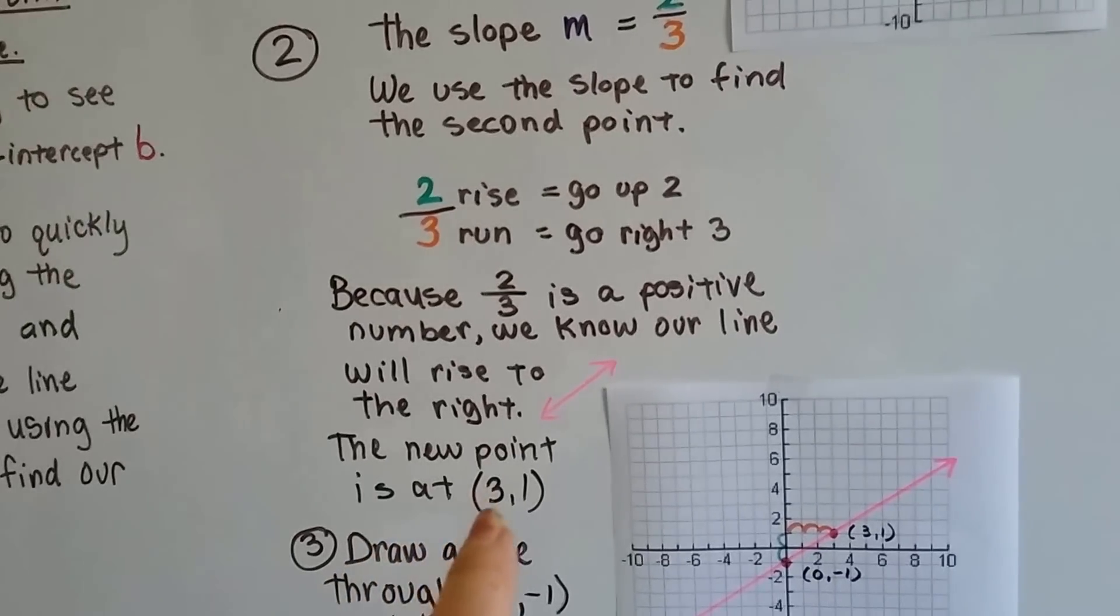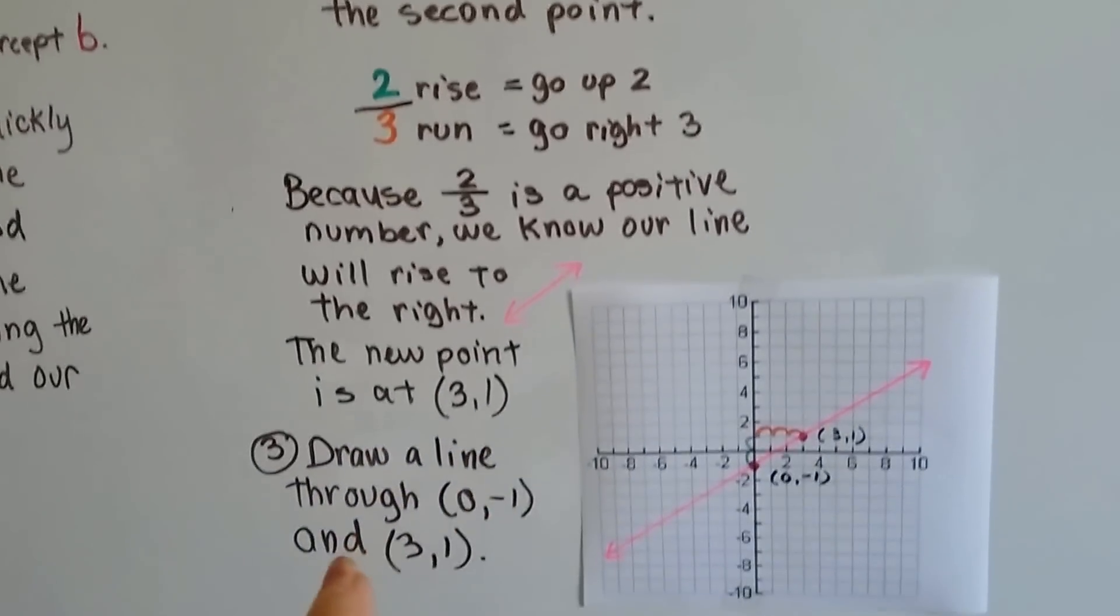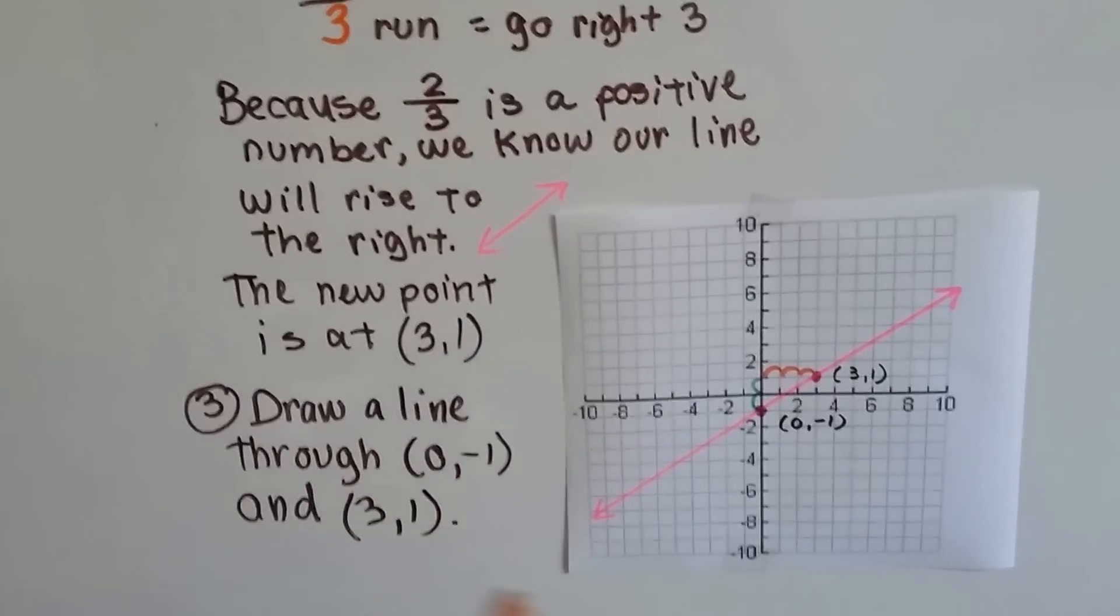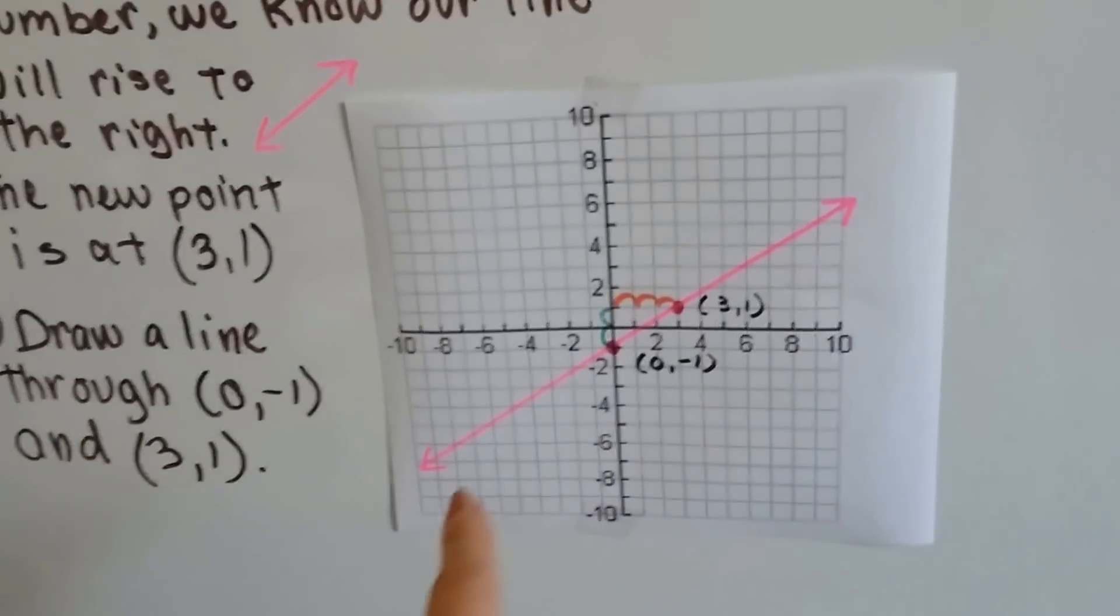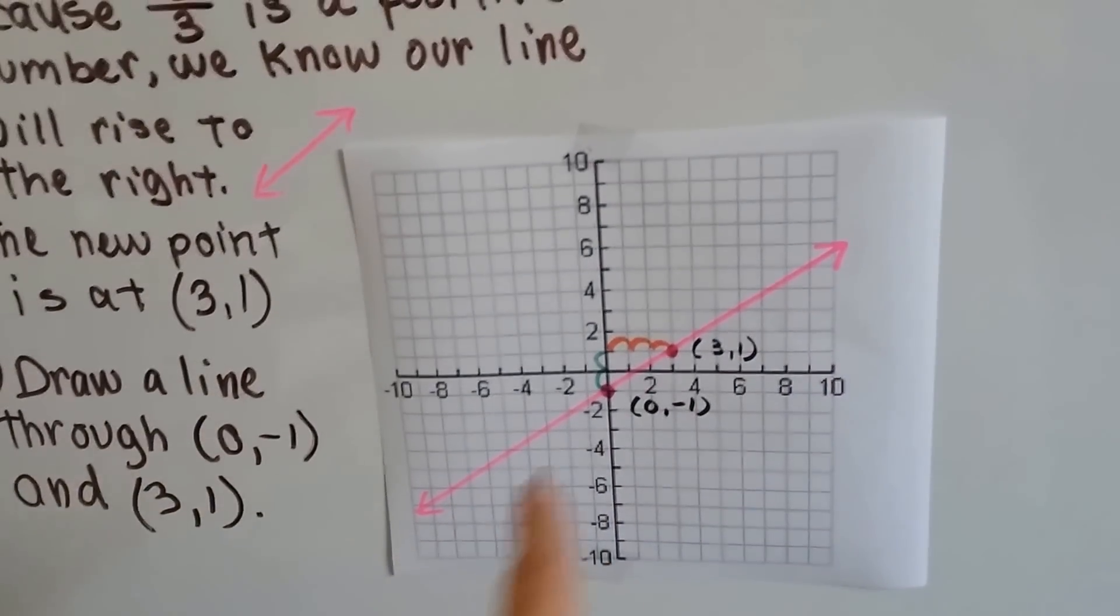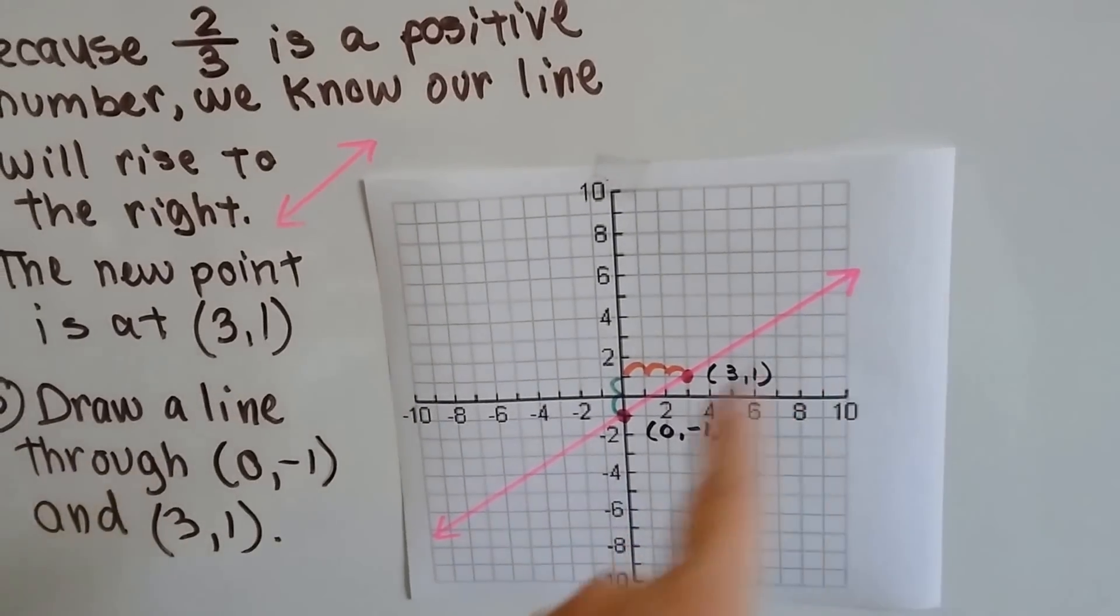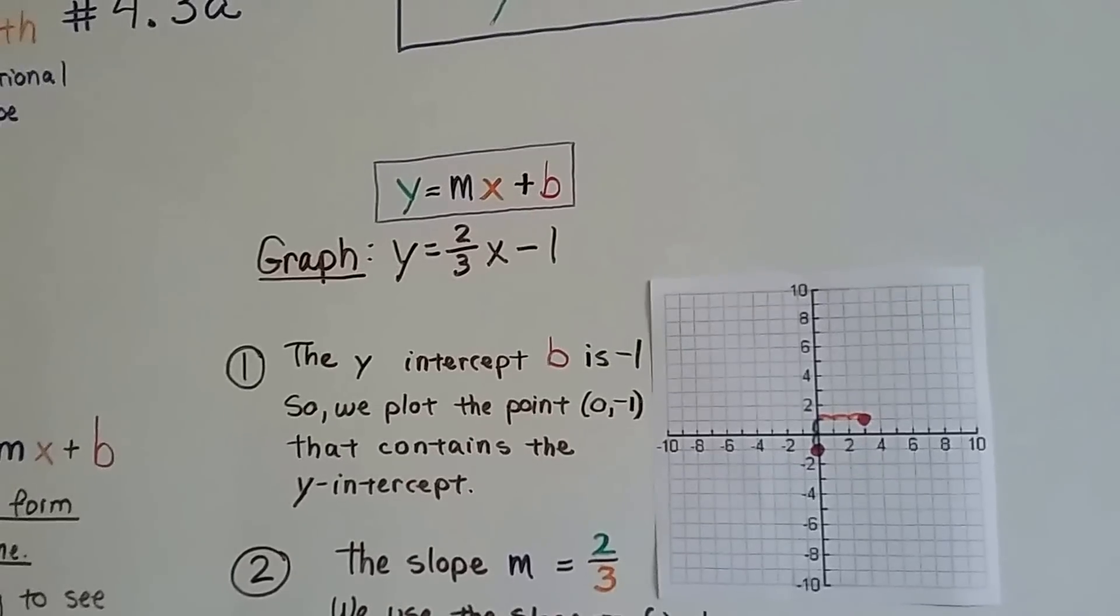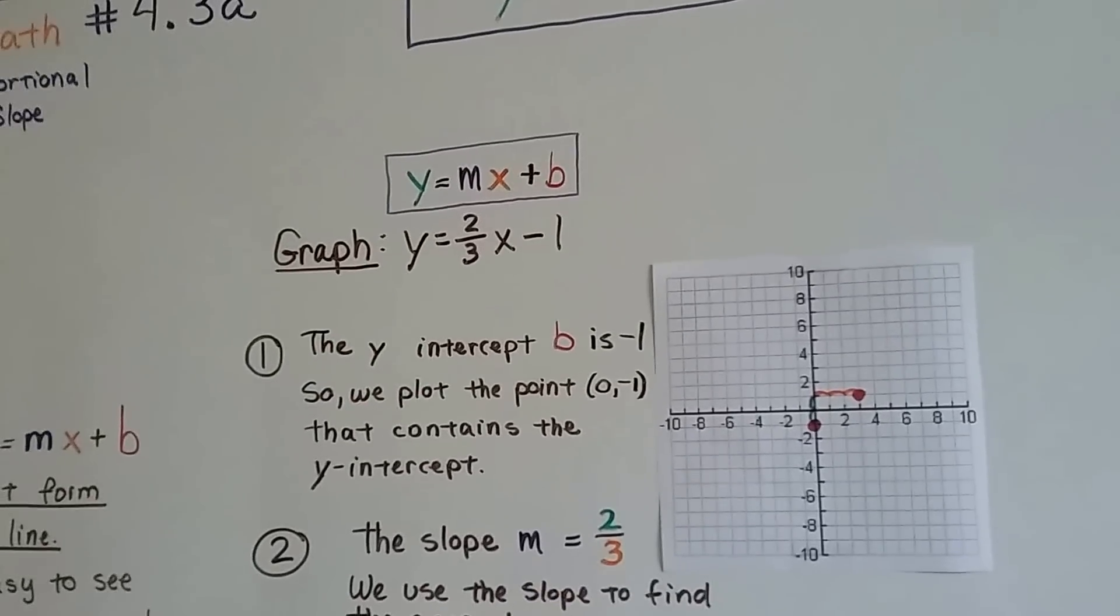So the new point is at 3 and 1, and we draw a line through the 0, negative 1, and the 3, 1. And that's the line we get. And we did it by just having this equation with our slope and whatever the y-intercept was. Let's try it again.